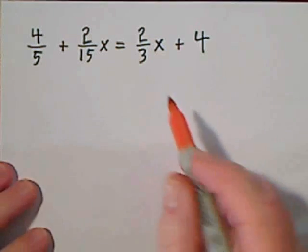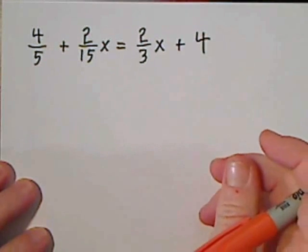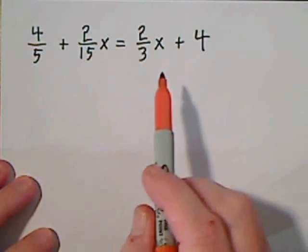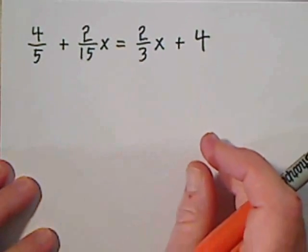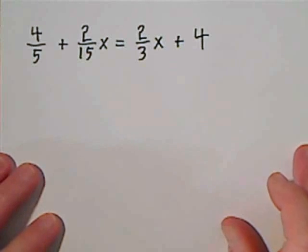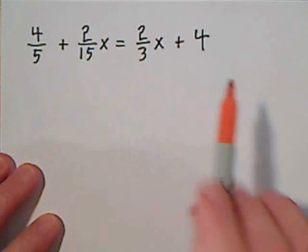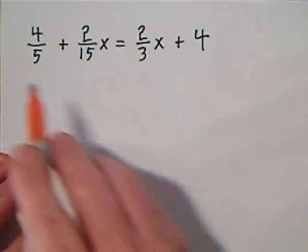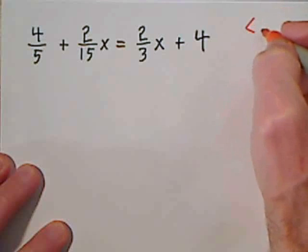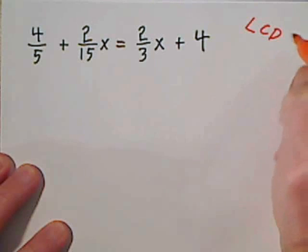All right, we're going to clear this equation of fractions before we solve it. You can solve it just dealing with the fractions. Whenever you add or subtract, you have to get common denominators. That is a lot of work, so it's convenient if we can just get rid of all these fractions. The idea is you find the least common denominator. So between 5, 15, and 3, your LCD is 15.